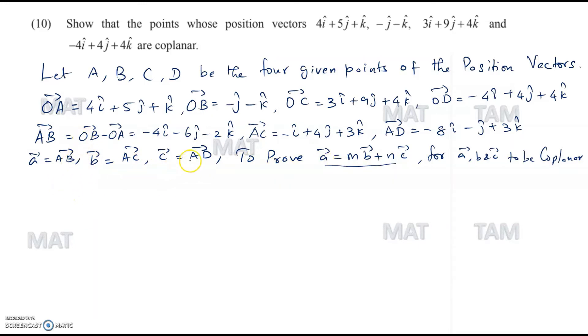We have A as vector AB which is minus 4i cap minus 6j cap minus 2k cap is equal to M into B vector which is our AC vector, minus i cap plus 4j cap plus 3k cap, plus N into our AD vector which is minus 8i cap minus j cap plus 3k cap. Taking the coefficients of i, j, and k, let's start with i.